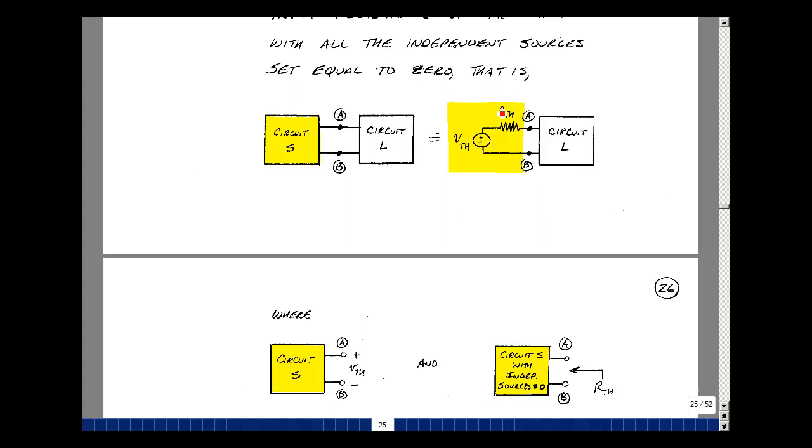To find the resistance R Thevenin, you take this box and set all the independent sources equal to zero. Short voltage sources, open current sources, and look back in, and you'll see series and parallel combinations of resistances. Find the value of R Thevenin, and that's what's going to go over here.